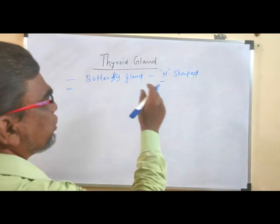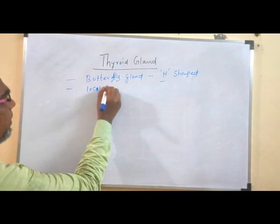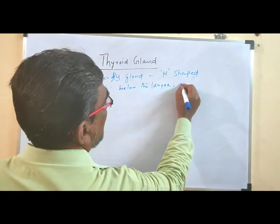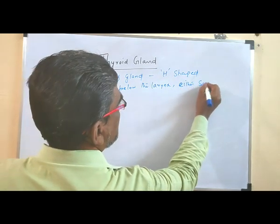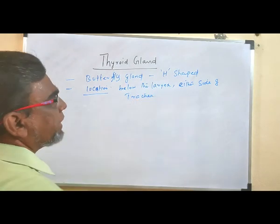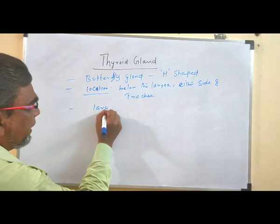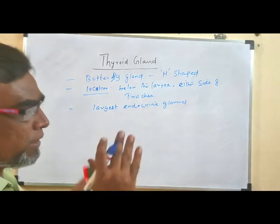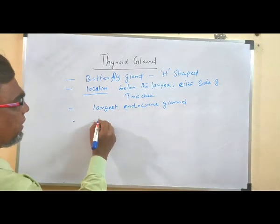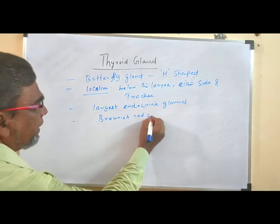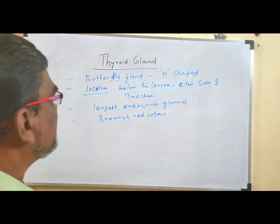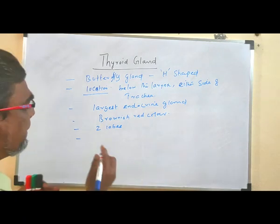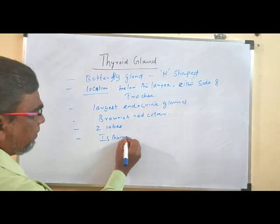This butterfly gland, or H-shaped gland, is located below the larynx and either side of the trachea. It is the largest endocrine gland, and its color is brownish-red. This gland has two lobes, and these two lobes are connected by a median tissue called the isthmus.